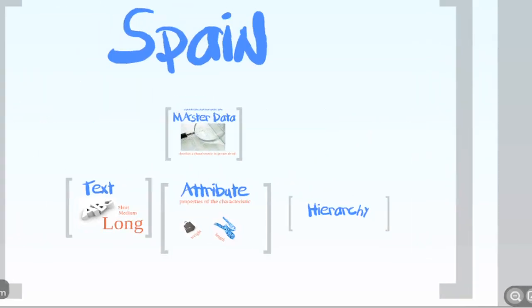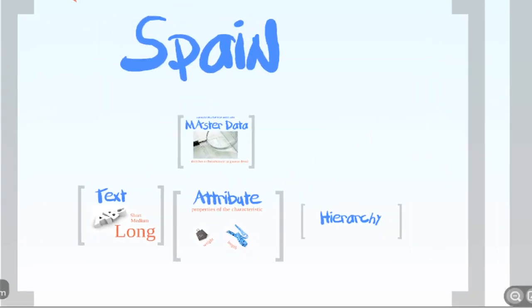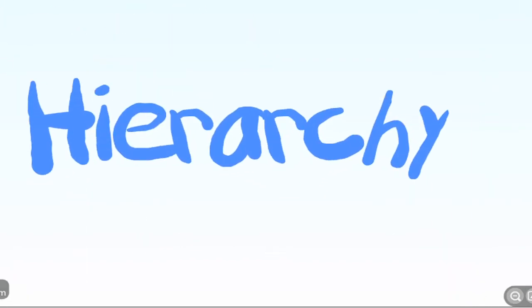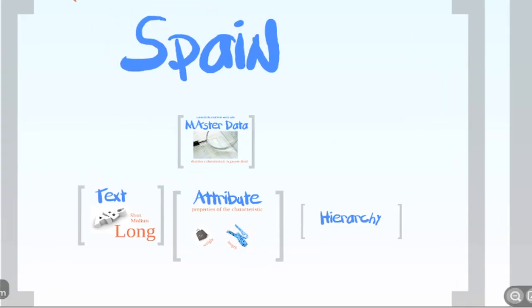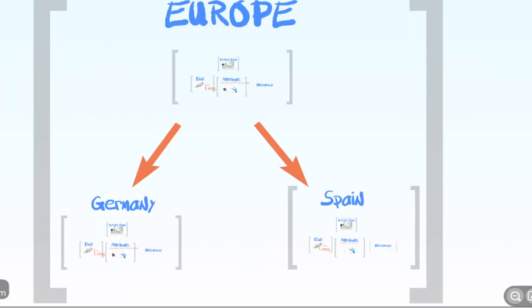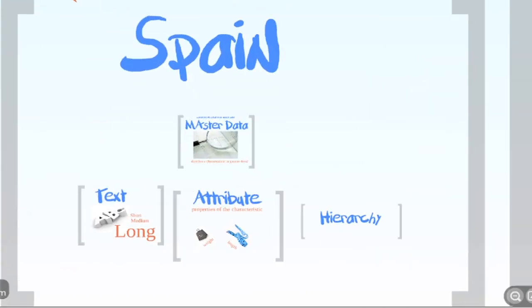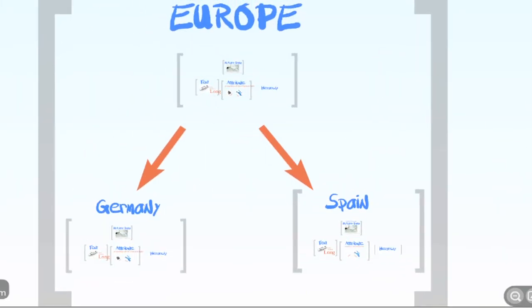Imagine if he was our customer from our customer company in Spain and we had other customer companies in Europe. We would have another info object that we can use to describe these.